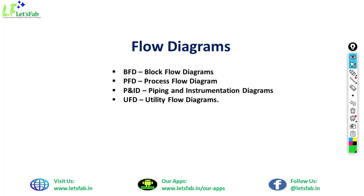First, we see flow diagrams. In flow diagrams, there are four types: block flow diagram, process flow diagram, piping and instrumentation diagram, and utility flow diagrams. Out of these four, the piping and instrumentation diagram is the most useful drawing, used in fabrications and project management — whether you are a project engineer, design engineer, or process engineer. We will brief the P&ID diagrams in the later part of this video, and give an overview of the other three types.